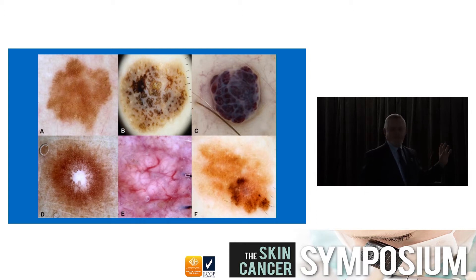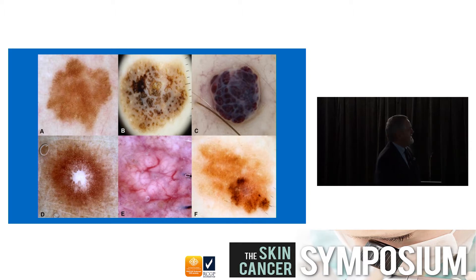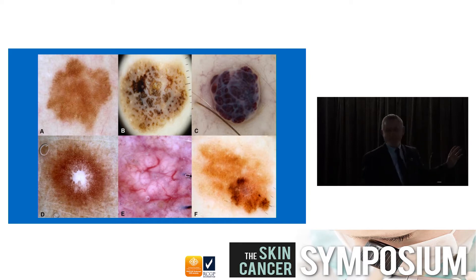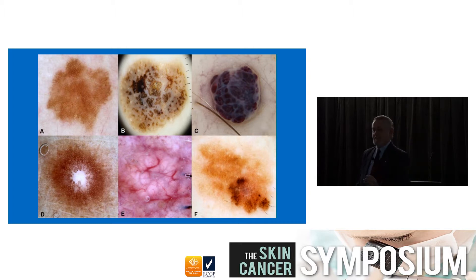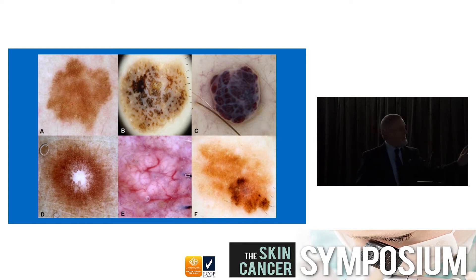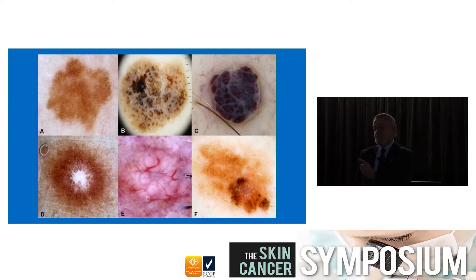Here are the five things you will see every single day which you should recognize just like those animal faces: nevus (A), seborrhoeic keratosis or lentigo (B), hemangioma (C), dermal fibroma (D), and sebaceous gland hyperplasia (E). You will recognize all of these by this time next week.